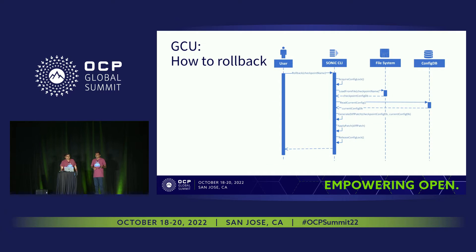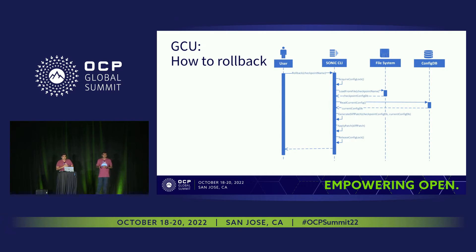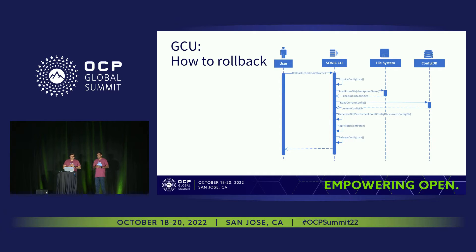And how do you do a rollback? Rollback is basically: get the checkpoint. We provide a checkpoint name, so we retrieve the file saved with that particular name from the file system. At the same time, we read the current config — what is there in the config DB — and we generate a JSON patch. Then we use the apply-patch mechanism, which is the same CLI, to roll back to the corresponding checkpoint.